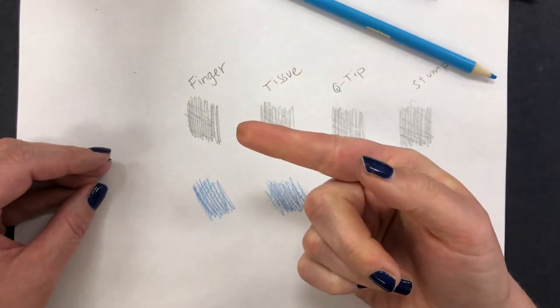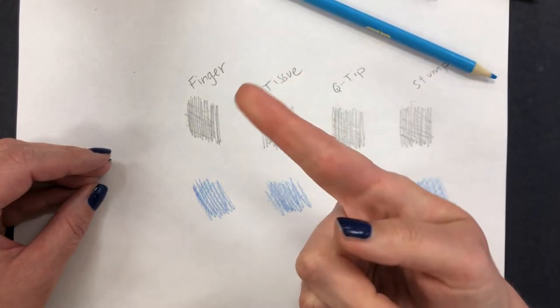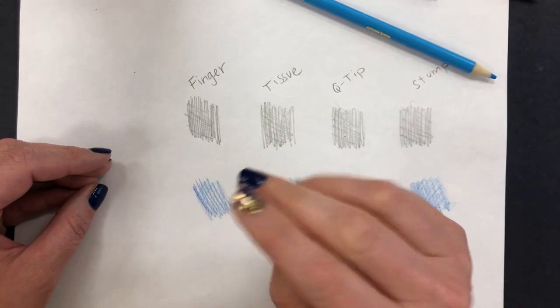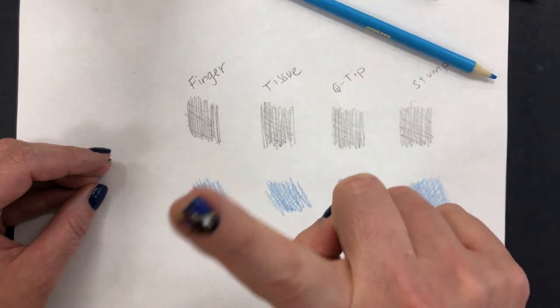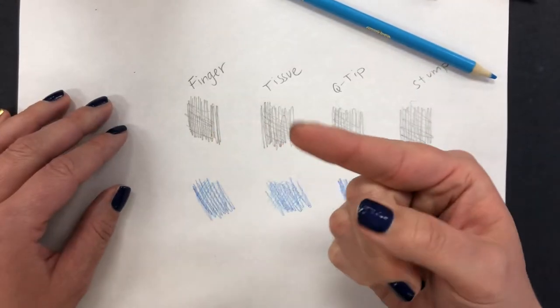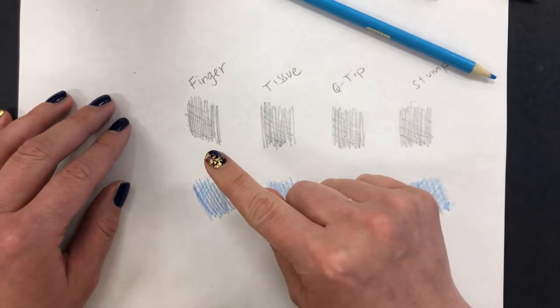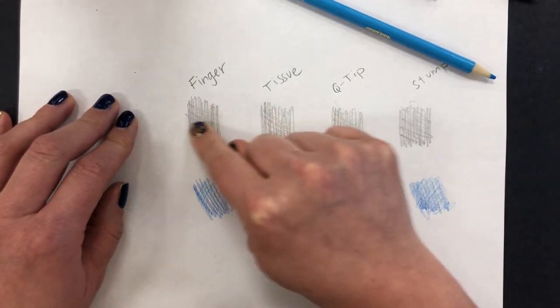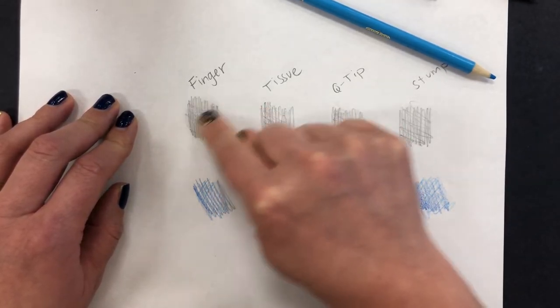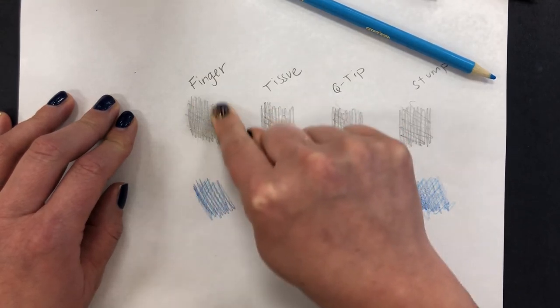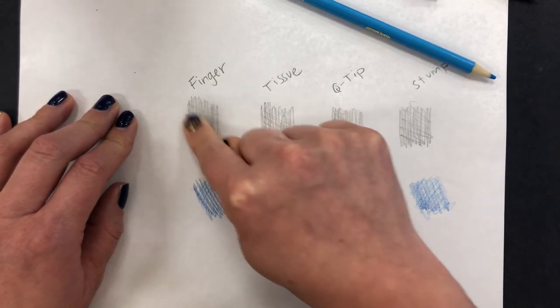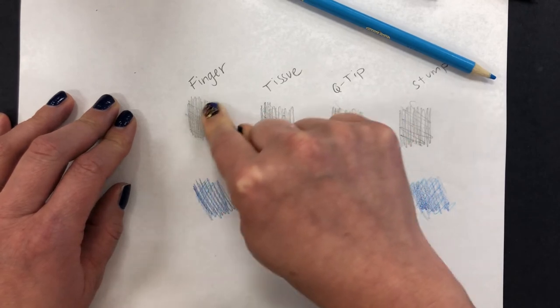So this is going to get your finger dirty. You're going to take one of your fingers, or you could do two as well. I always think it's easier for me to use my pointer finger and I'm going to blend with my finger, getting that graphite really pressed into the paper.